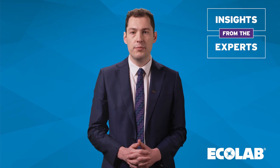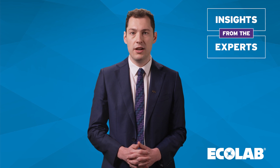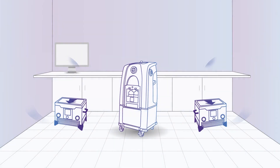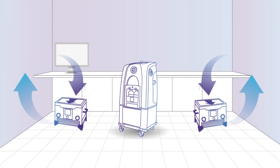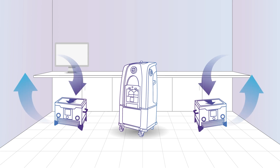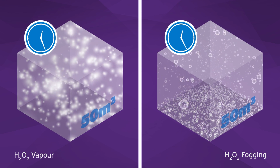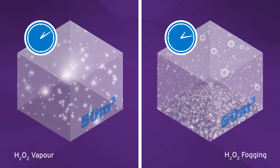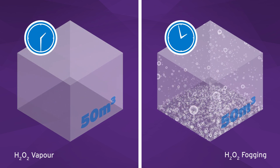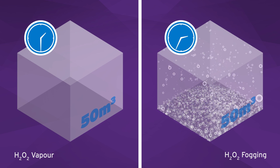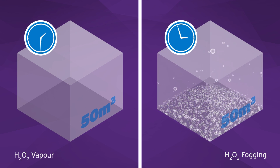When it comes to how long the process takes, fogging systems typically rely on passive decomposition of hydrogen peroxide, leading to longer cycle times, whereas vapour systems utilise catalytic aeration devices, which makes the process much quicker. For example, the total cycle time for a 50-metre-cubed room is around one and a half hours for vapour decontamination and two to three hours for fogging systems.